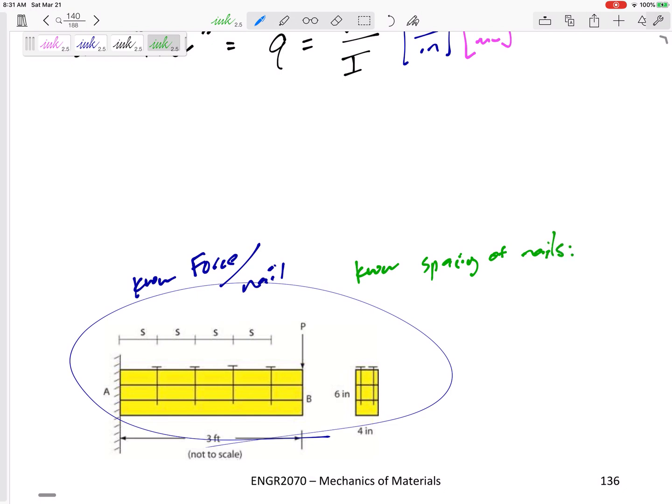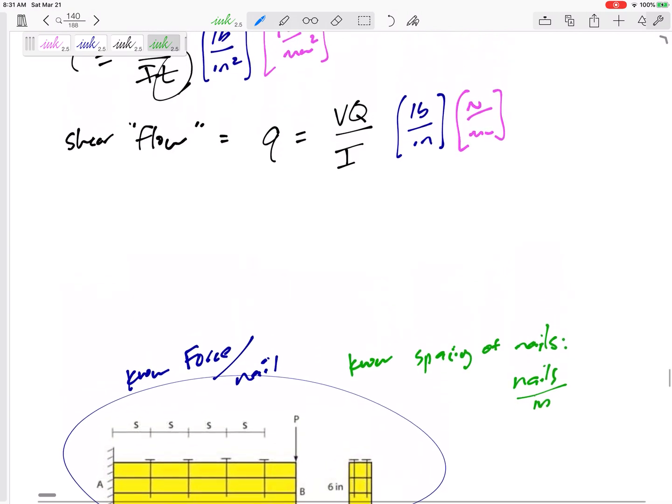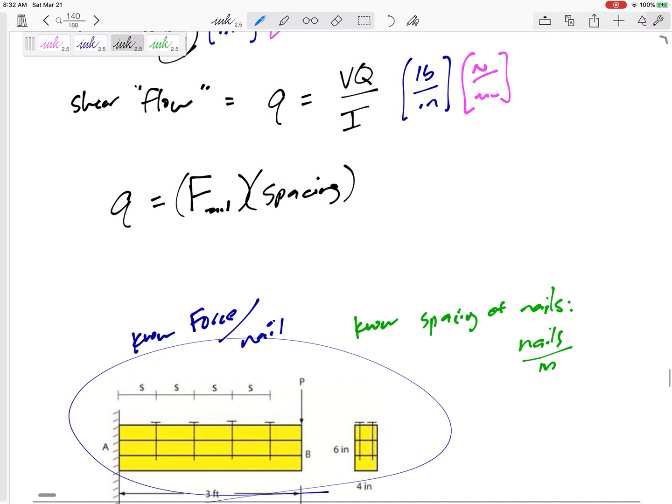or maybe we also know or could know or want to calculate the spacing, spacing of nails. For instance, how many nails per inch? Here we go. I'm doing a terrible job because we're not going to have to use this. But the shear flow, q, could also be the force per nail times the spacing. The shear flow could be the force per nail times the spacing. Let's look at the units here.